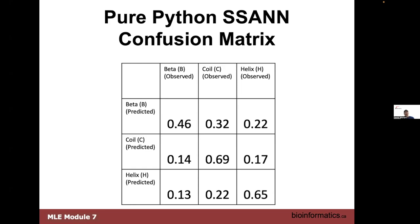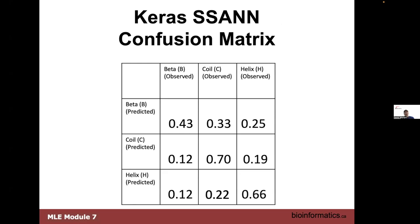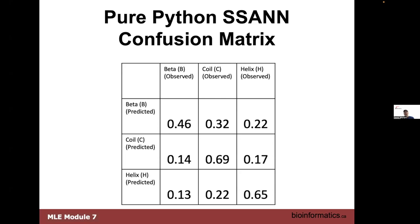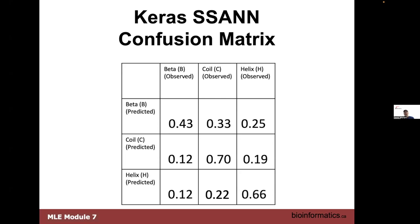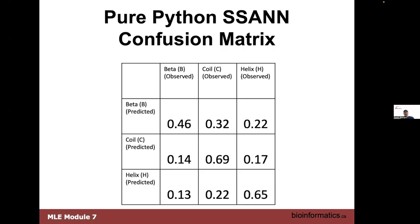Here's the one with Keras so we can compare. Our beta prediction is a little worse, but our coil prediction is a little better and our helix prediction is a little better. Some of the off-diagonal elements are close or about the same, and we should expect that — outside of just the fact that we changed the activation function from sigmoid or softmax to ReLU, which might be the only reason why there are some differences.